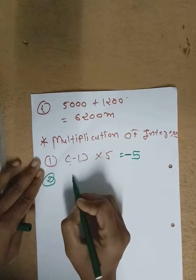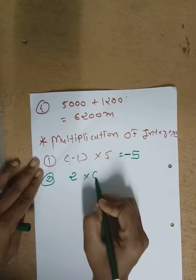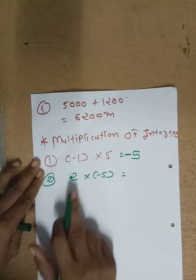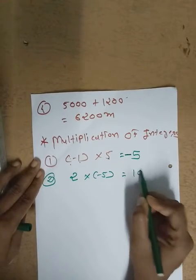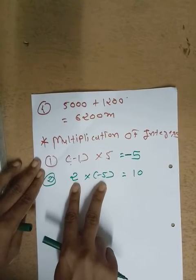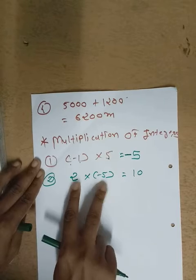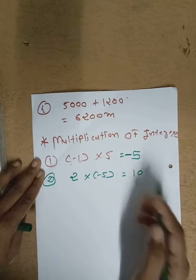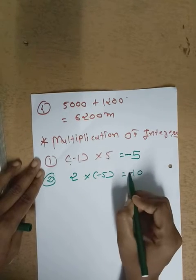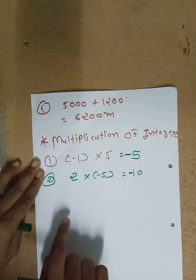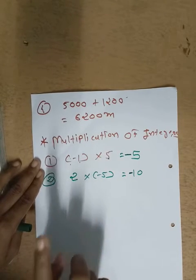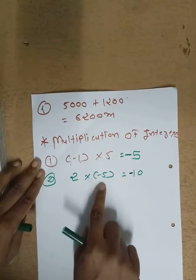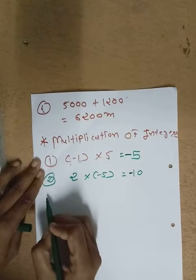Second example: two multiply by minus five. First of all, simple multiplication — two fives are ten. Here we have two numbers: two and minus five. Out of both, one number is negative, so the answer is minus ten. In multiplication, out of two numbers, if one number is negative, the answer will be negative.